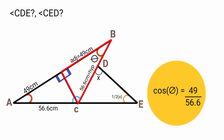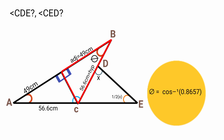49 over 56.6 is 0.8657. To find the exact value of θ, we calculate the inverse cosine of 0.8657. This gives θ equals cos⁻¹(0.8657), which is approximately 30.037°. Since 0.037 is negligible, we approximate θ to be equal to 30 degrees.